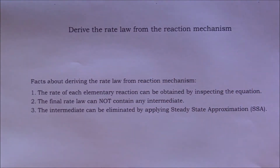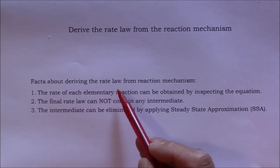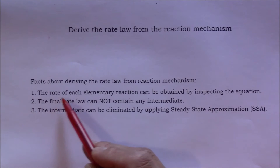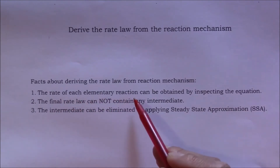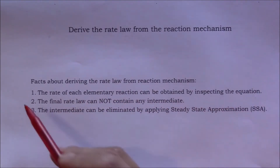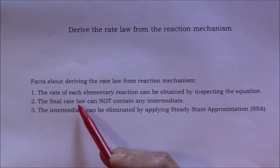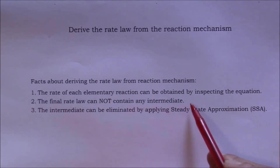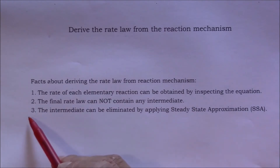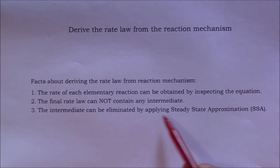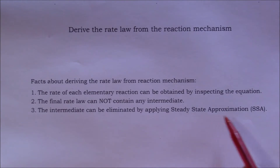There are three facts I want you to memorize when you derive the rate law from the reaction mechanism. Number one, the rate of each elementary reaction can be obtained by inspecting the equation. Number two, the final rate law cannot contain any intermediate. Number three, the intermediate can be eliminated by applying steady state approximation.